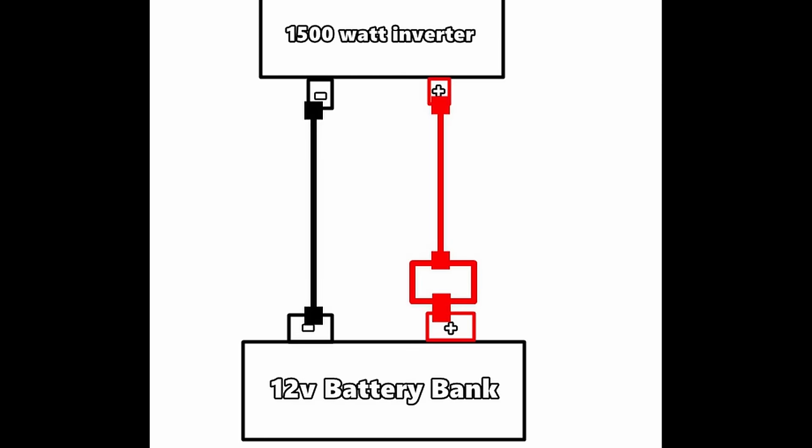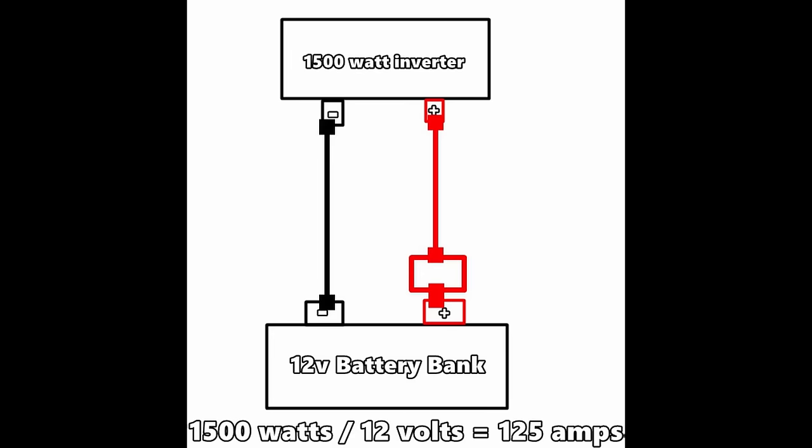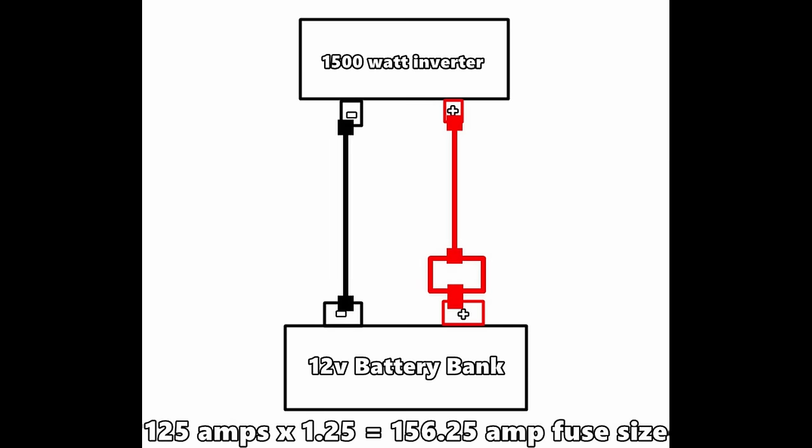For inverters, let's say we have a 1,500-watt inverter. Divide 1,500 by 12 volts to get 125 amps, then multiply by 1.25 to get 156.25 amps — so you'd use a 160-amp fuse, which is likely the closest size available at the store. You could add another 20% for surge, bringing it to around 170–180 amps. Slow-blow fuses can also work better for inverters. Just use 1.25 and a wire gauge chart — that's how you size a fuse or wire gauge.